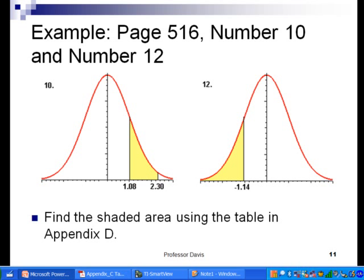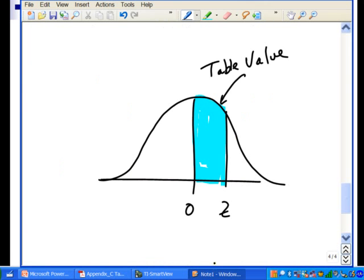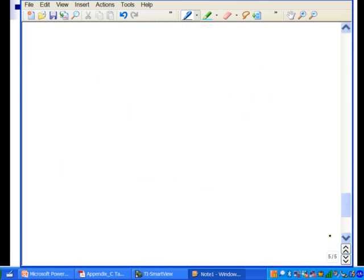Let me show you what I'm talking about here. And in our second example, let's find the shaded area using the standard normal table that we have from the back of the book. All right, so in number 10 here we want to find the area trapped in between 1.08 and 2.30. All right, so let's get going on that now.